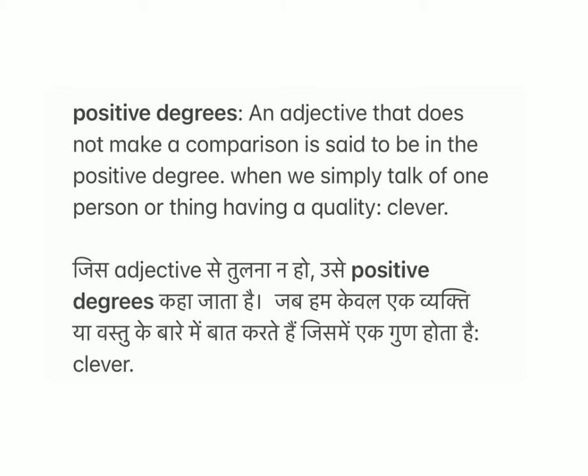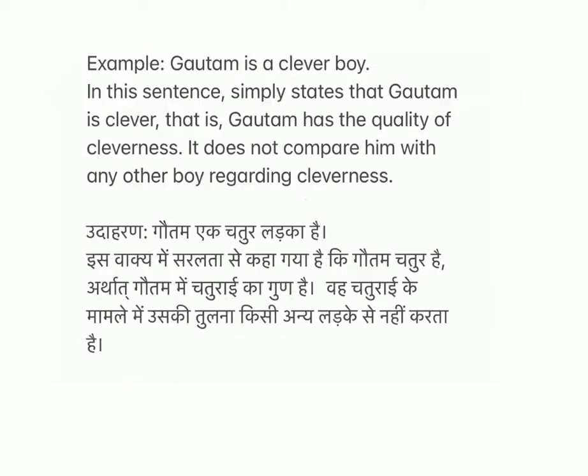Positive degree: an adjective that does not make a comparison is said to be in the positive degree. When we simply talk of one person or thing having a quality. Example: Gotham is a clever boy. This sentence simply states that Gotham is clever – that is, Gotham has the quality of cleverness. It does not compare him with any other boy regarding cleverness.